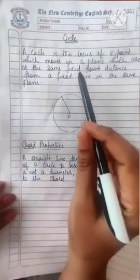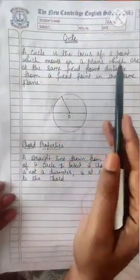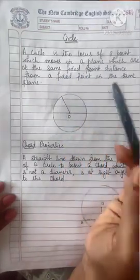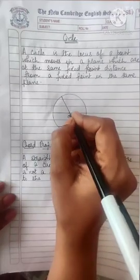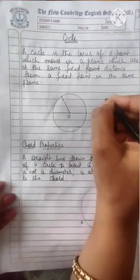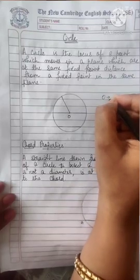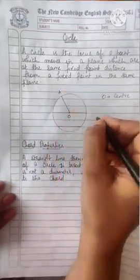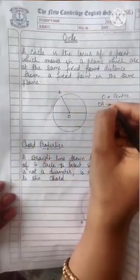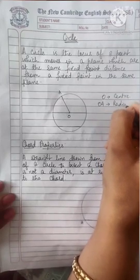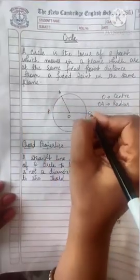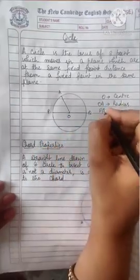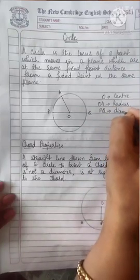A circle is the locus of a point which moves in a plane at the same fixed distance from a fixed point in the same plane. This fixed point is called the center of the circle. The distance OA is called the radius, and the line PQ is the diameter of the circle.